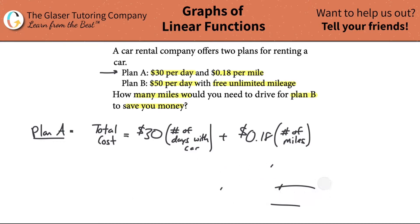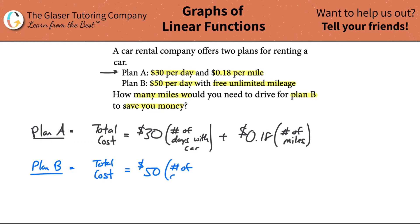Now let's create a second equation for Plan B. The total cost of Plan B will simply be $50 times the number of days with the car. Since it's free unlimited mileage, we don't add anything for miles — that term is zero. So if you had the car for five days on Plan B, it would cost you $250, and even if you drove 50 million miles, you wouldn't pay a dime for the mileage.